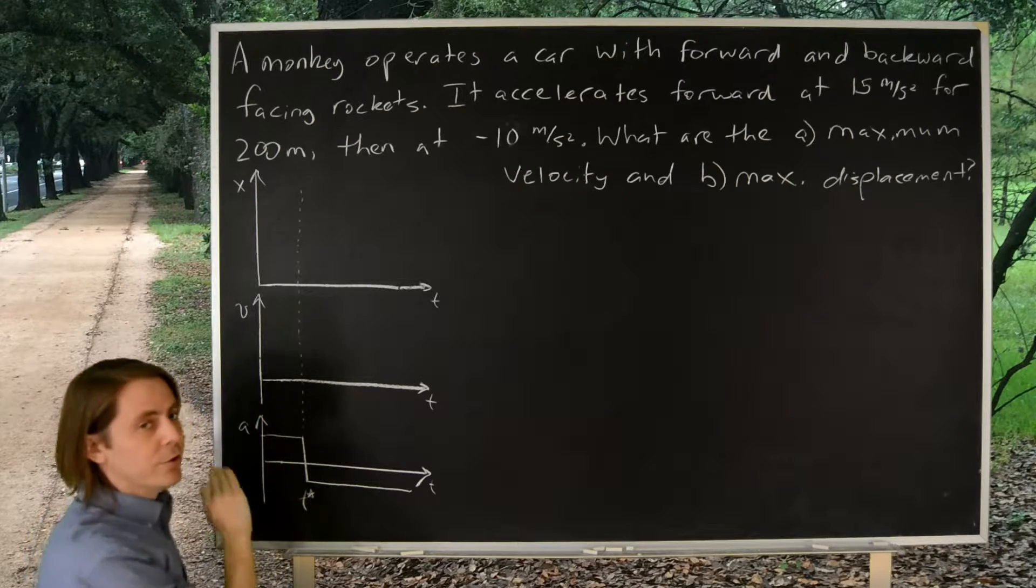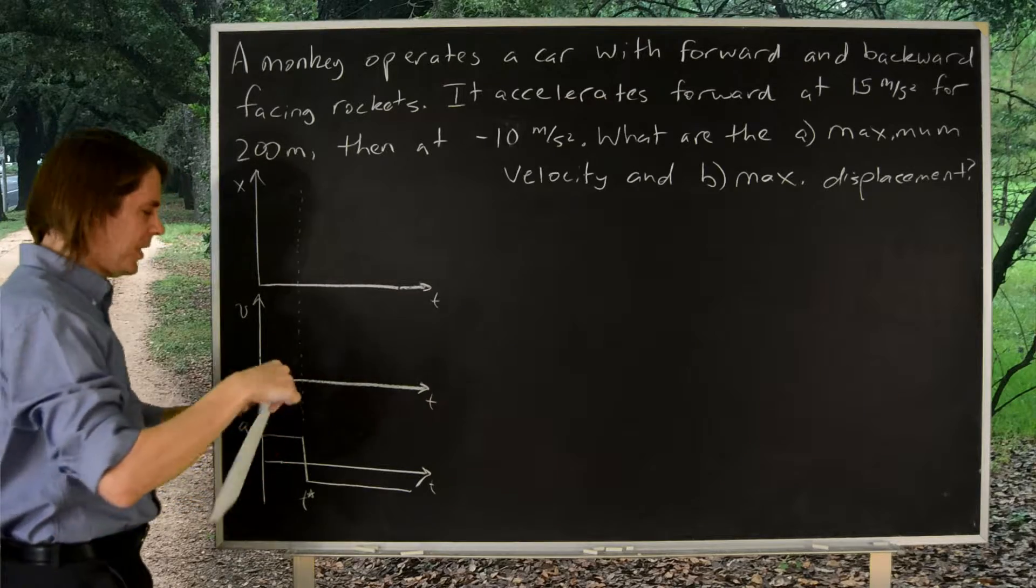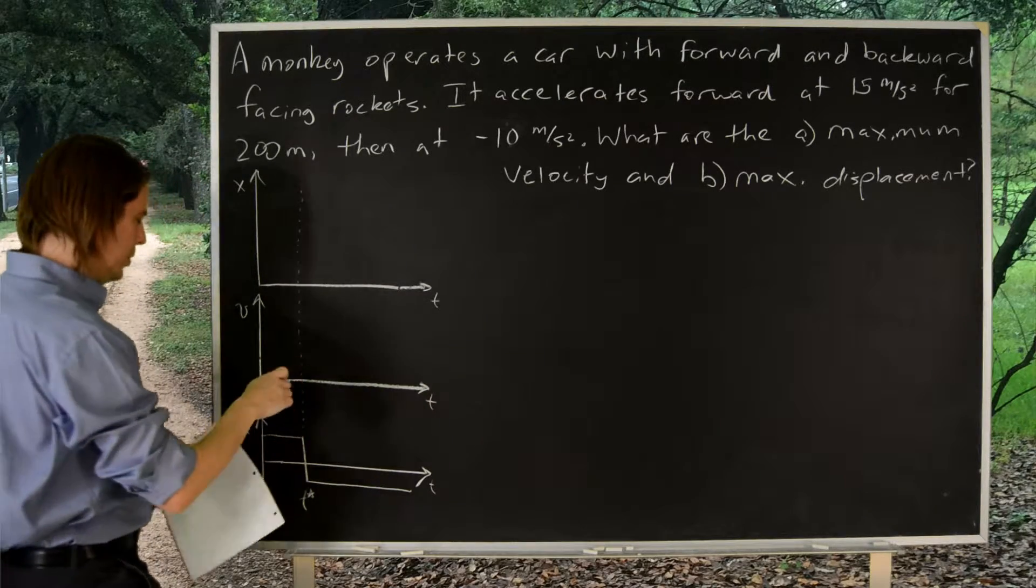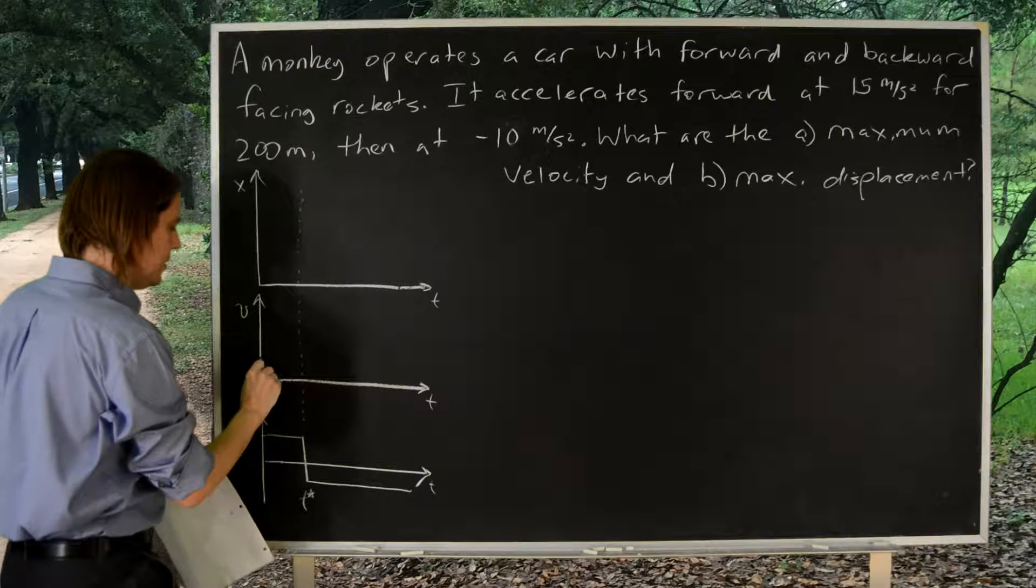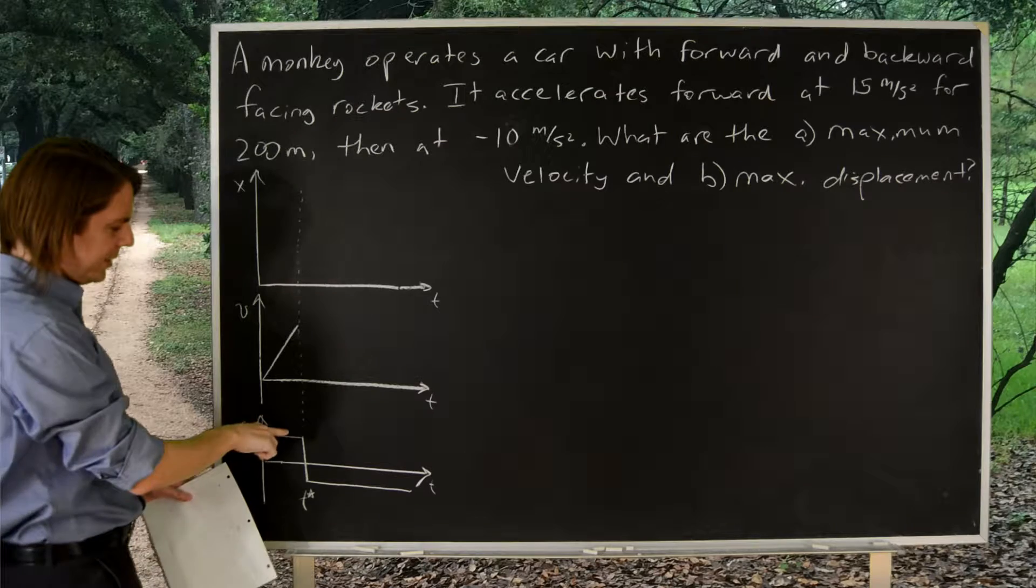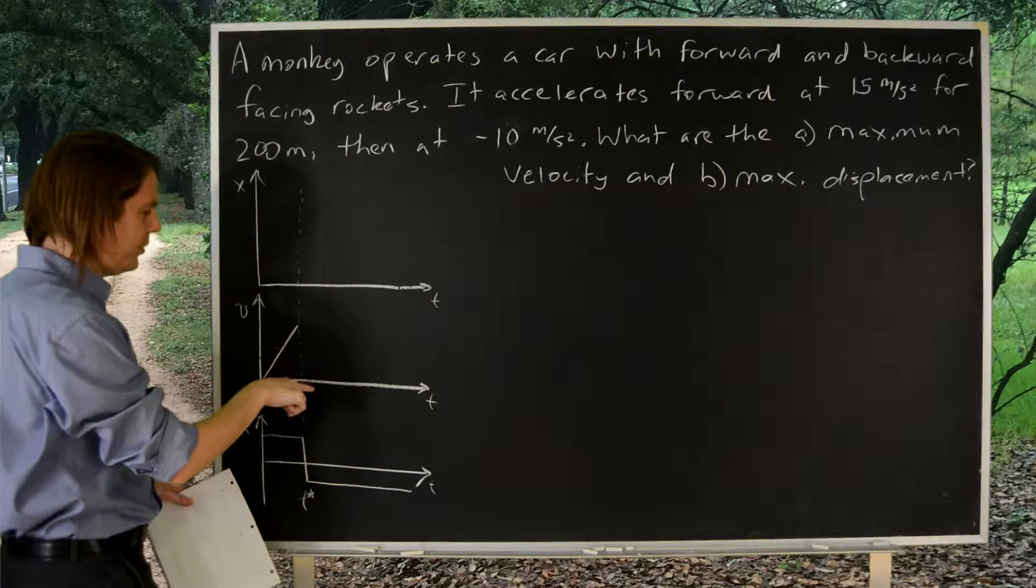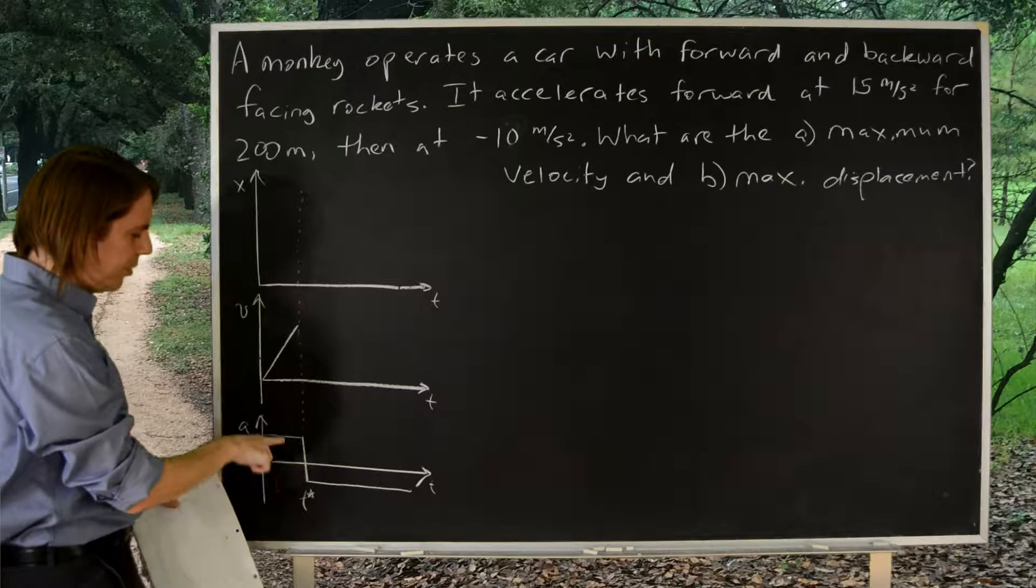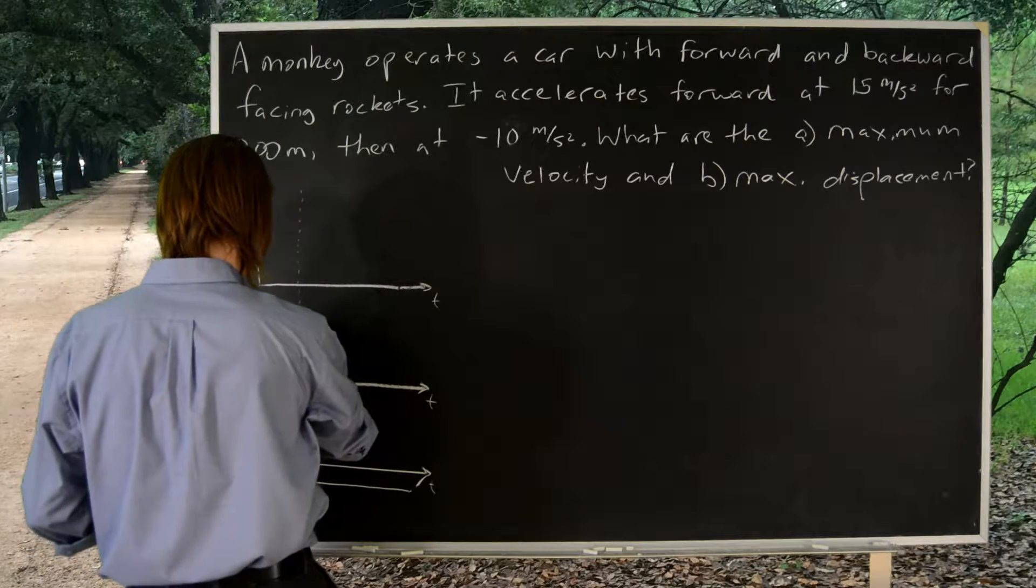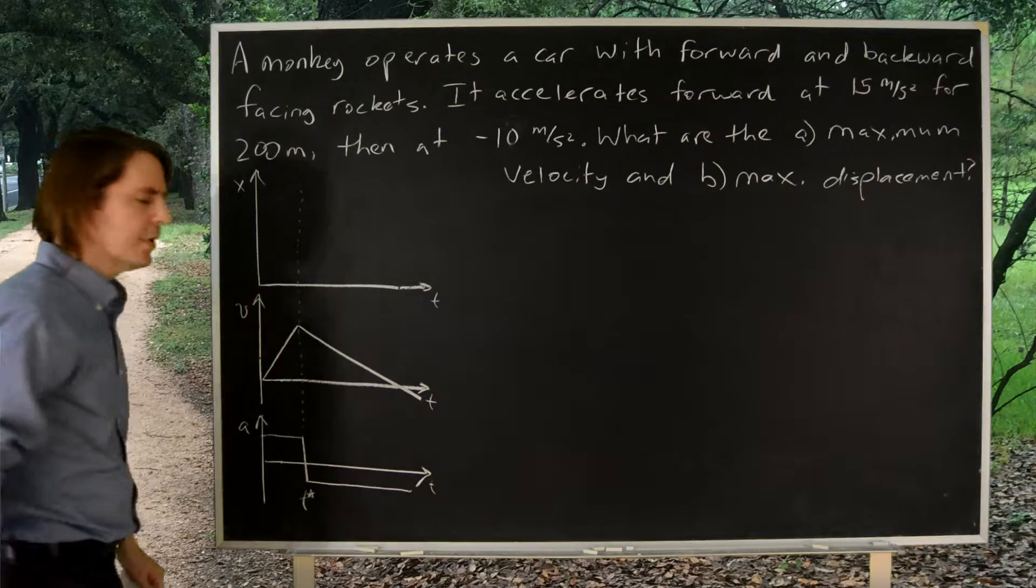Now let's do velocity. So assuming it started from rest - forgot to say that in the problem - at a constant positive acceleration, the velocity will increase uniformly like this. And then it switches to a negative acceleration. So the velocity will decrease uniformly, but also with a lower slope. This was 15, this was 10. So I would draw this one coming out like that. The slope is clearly lower.